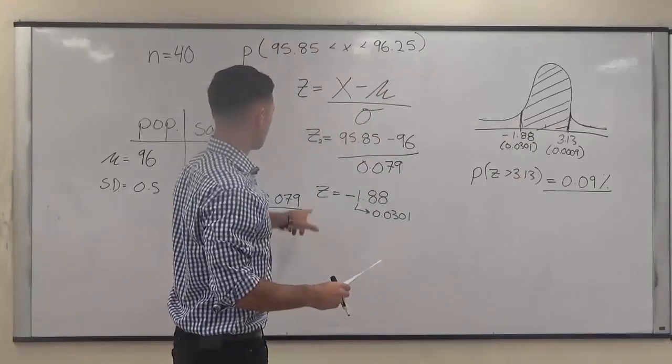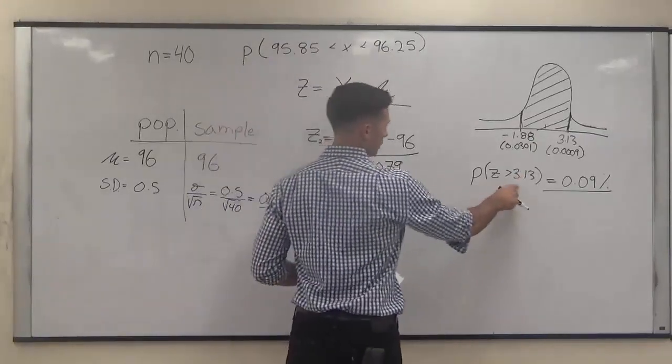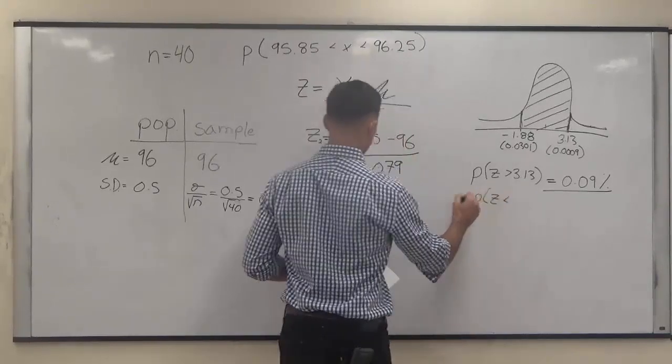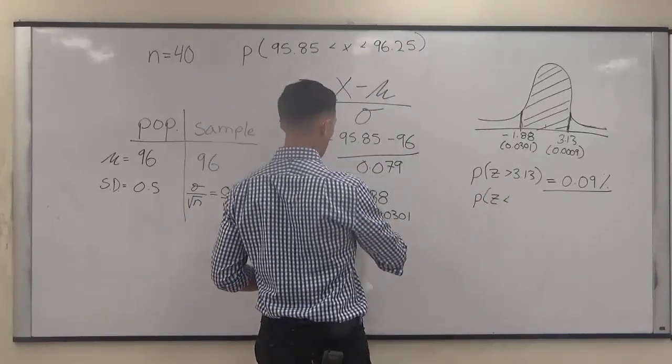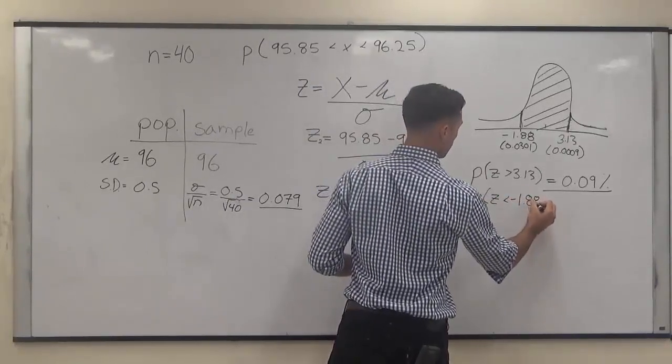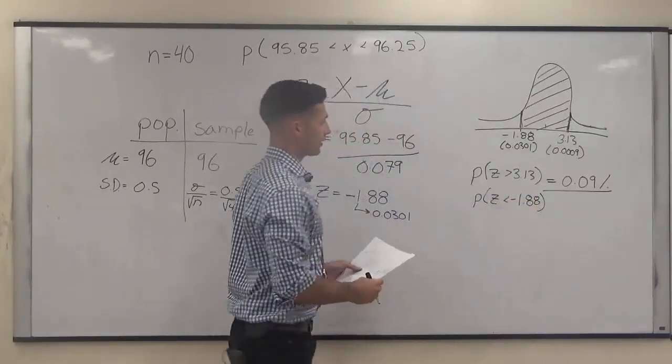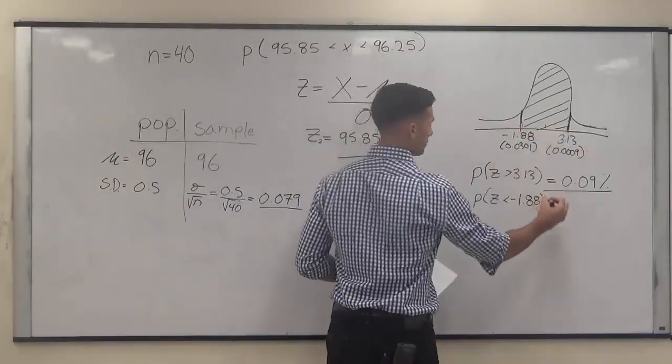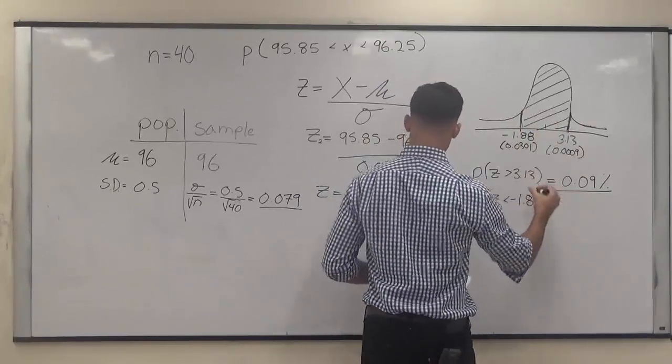However, based on these table scores, this one from earlier, we can now add the probability that z is less than negative 1.88. But you have to remember that the scores that are going to come from this are going to be giving us the tails. We're looking for what's in the middle.